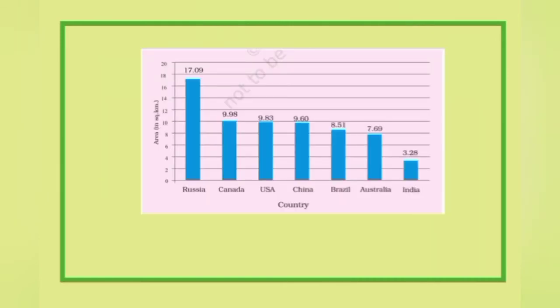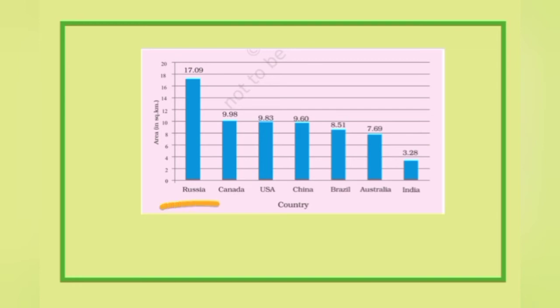Now we will read about India and the World. We know that India is the 7th largest country in the world. The countries larger than India in order are: Russia (largest), then Canada, USA, China, Brazil, Australia, and then India. Remember this order. India is the 7th largest country in the world.